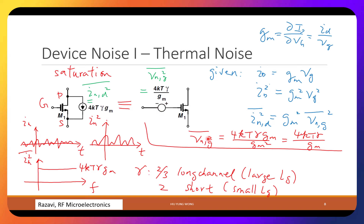The equivalent gate-referred voltage noise is VNG-squared equals IND-squared divided by GM-squared, which gives 4kTγ divided by GM. The take-home message: transistor channel thermal noise can be modeled as a drain current noise of 4kTγGM, or equivalently as a gate voltage noise of 4kTγ/GM. Remember the small-signal relationship: ID equals GM times VG.